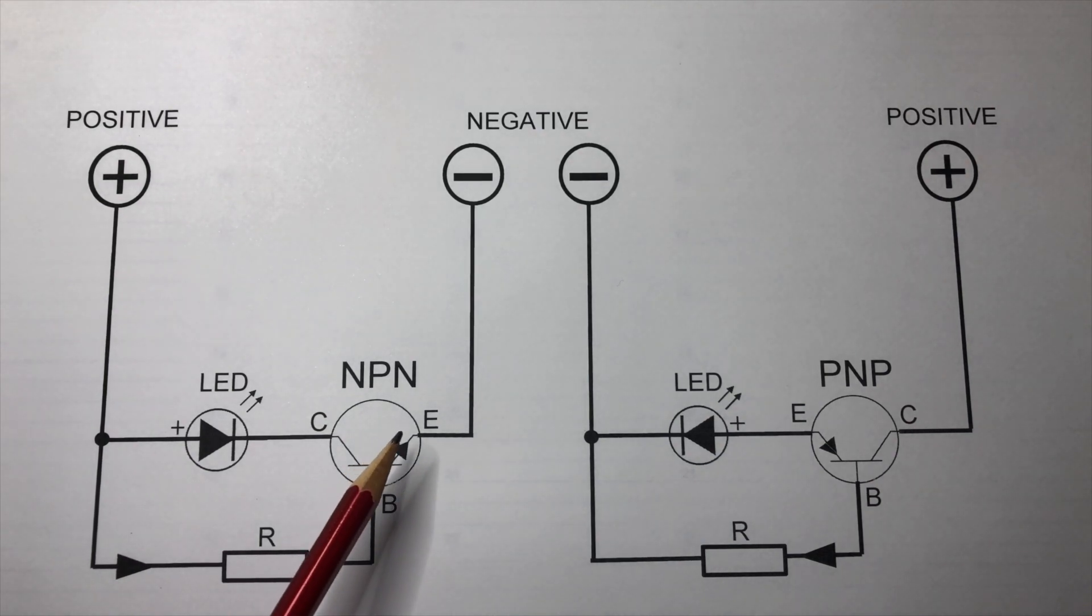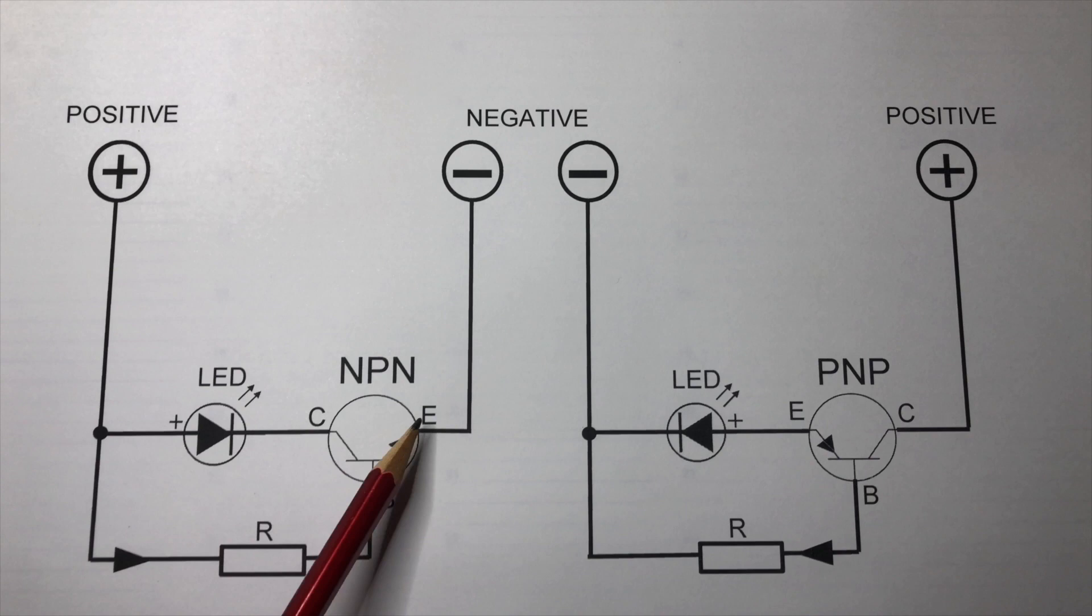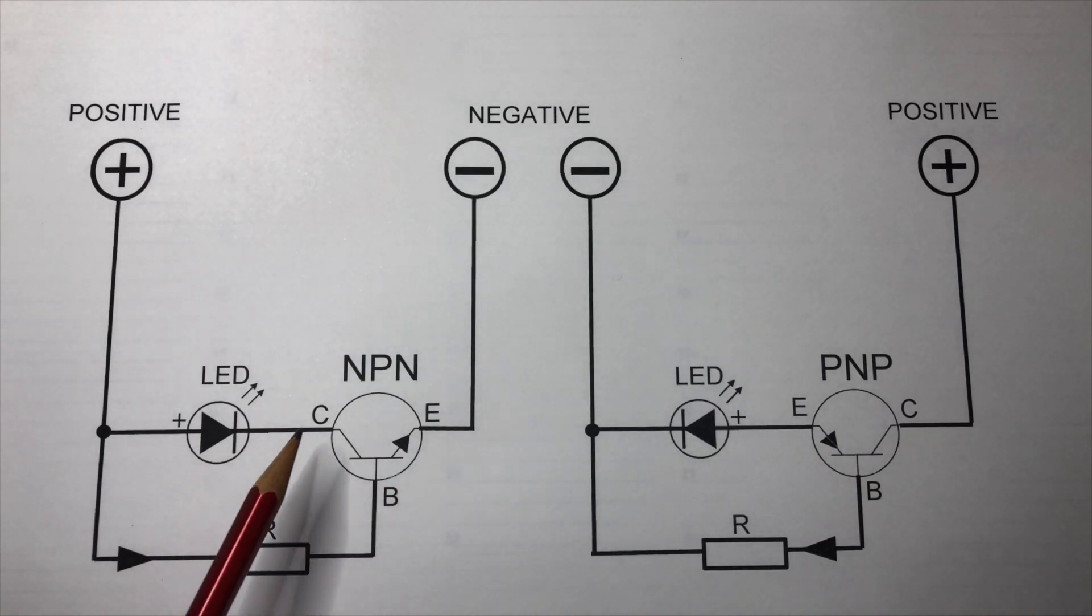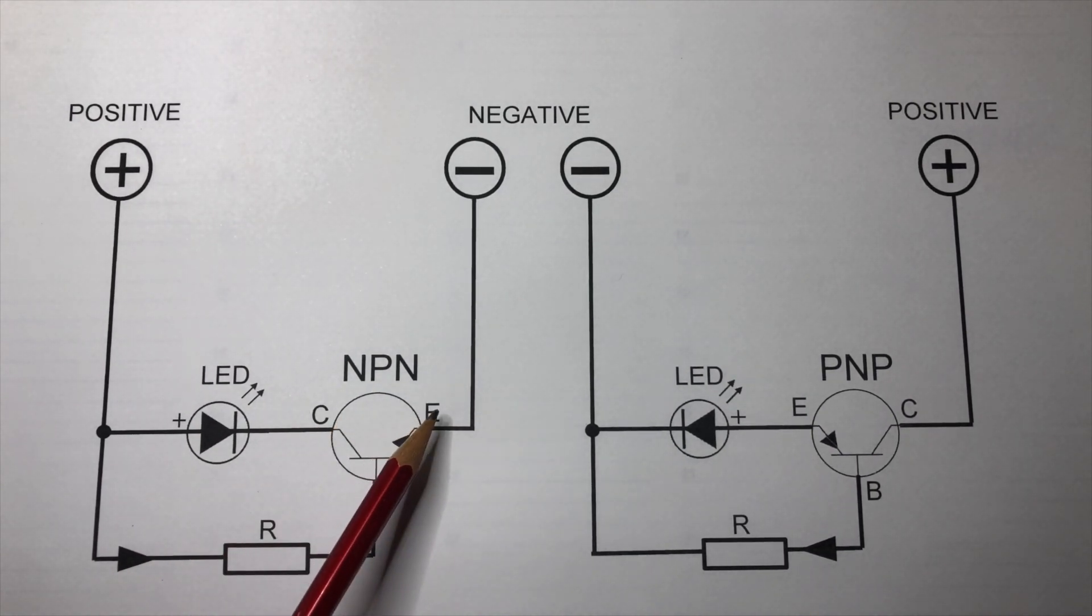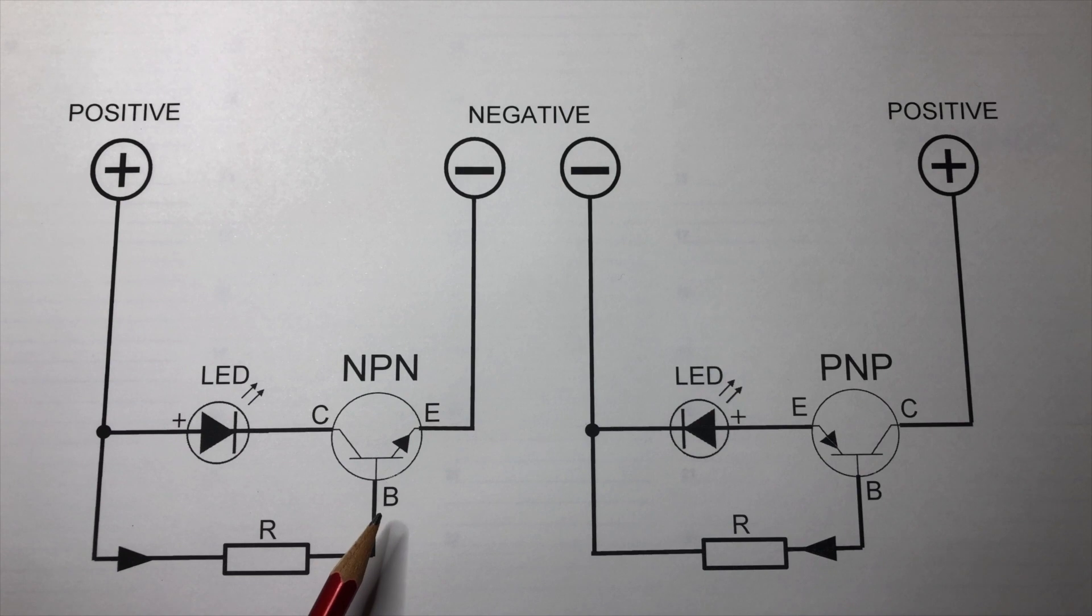A transistor is an active device with three terminals. They are called collector, emitter, and base. The base is responsible for controlling the transistor.